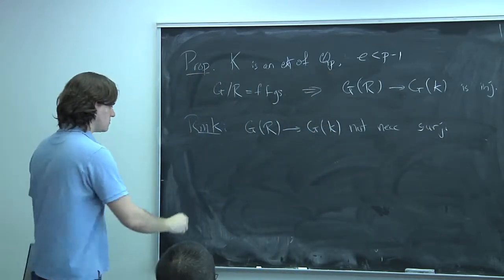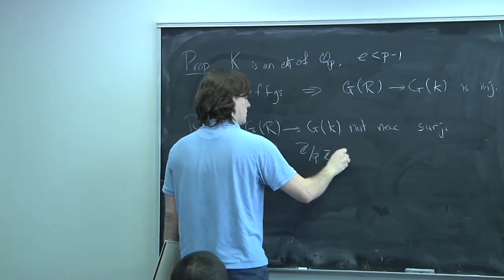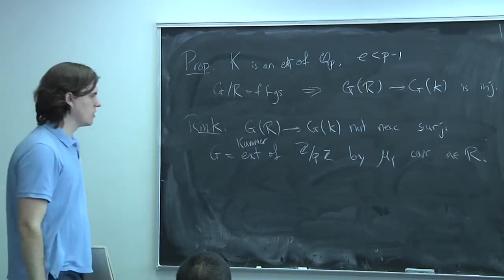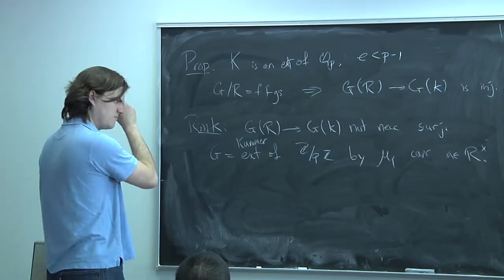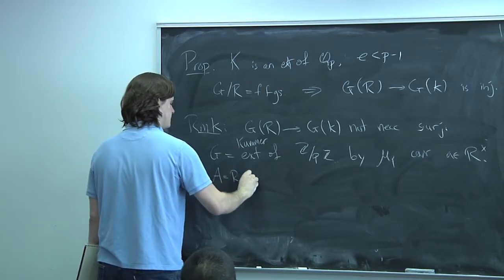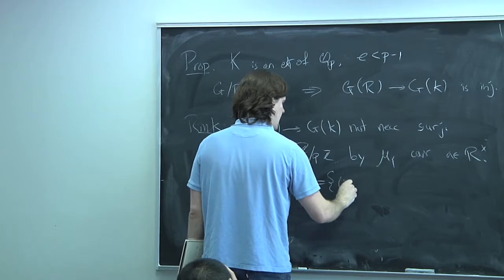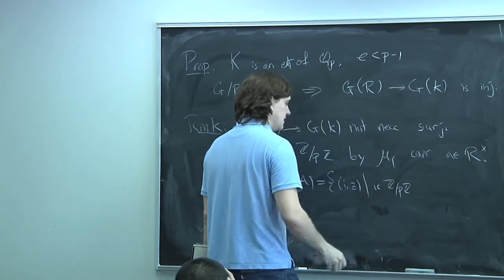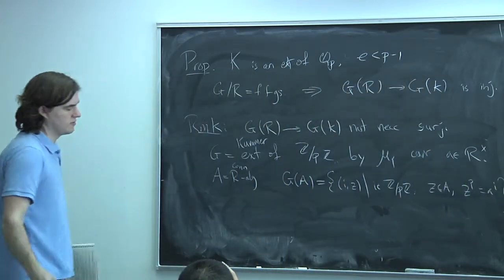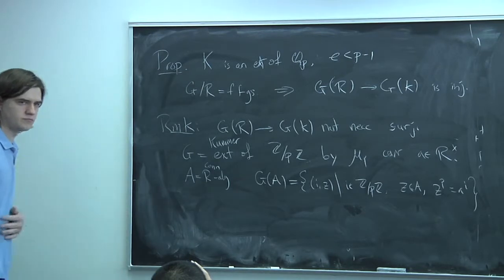Here's an example. Let G be the Kummer extension — the group scheme corresponding to some element A in R. For a connected R-algebra A, the A-points are pairs (i, z) where i ∈ ℤ/pℤ and z ∈ A with z^p = A^i. The group operation is on i by addition and on z by multiplication. If R has no p-th root of unity and no p-th root of A, then G(R) = 0.